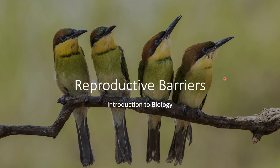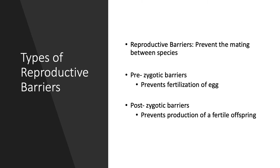Hello everyone and welcome, or welcome back, to the channel. Today we're going to be talking about reproductive barriers. A reproductive barrier is something that prevents the mating between species. There are actually different types of reproductive barriers, and two main categories.